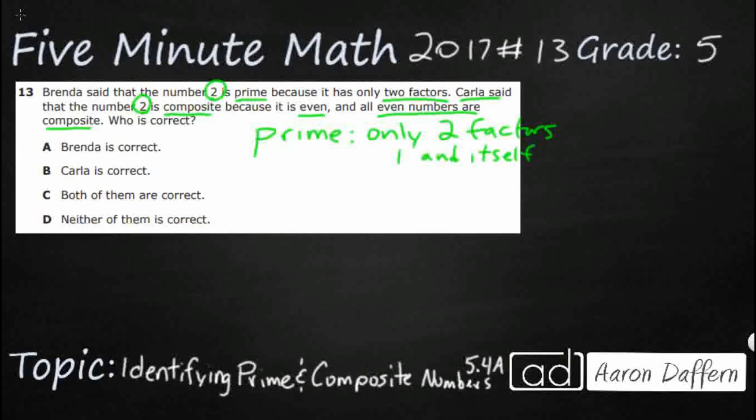So, let's get an example. Let's say 5. The only way that you can multiply any two numbers to get to 5 is 5 times 1. It's the only way to do it.